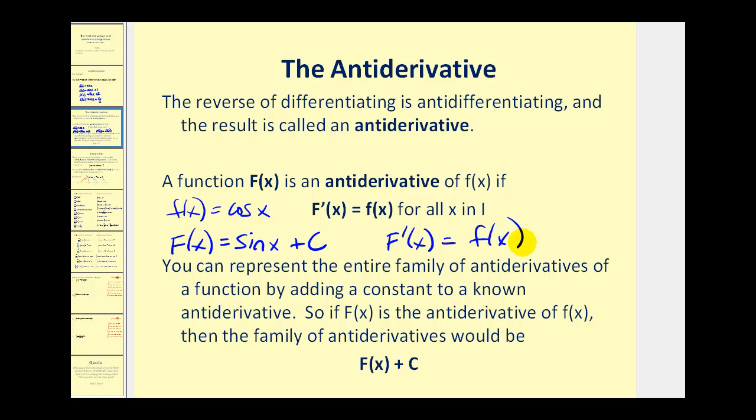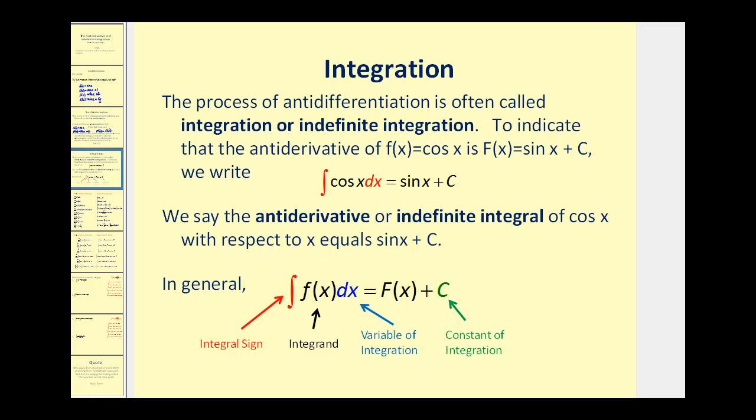To represent the entire family of anti-derivatives, we can add a constant, which we represent by plus c. So to formalize this, the process of anti-differentiation is called integration, or indefinite integration. To indicate the anti-derivative of f(x) equals cosine x is equal to big F(x) equals sine x plus c, we write the anti-derivative, or indefinite integral of cosine x with respect to x equals sine x plus c.